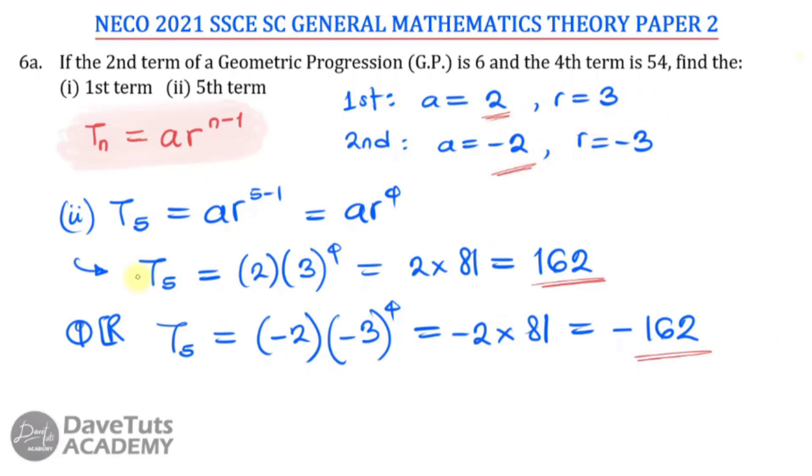So these are the possible solutions that we can have, that T5 can be 162 or minus 162, and the first term A can be 2 or it can be minus 2. Don't just take the square root of 9 as 3 and think you are getting your correct answer. You're only going to get half of the marks because square root of 9 is not 3, it is plus or minus 3. So just know that, and once you are able to pick that and solve your question, you are good to go and your full marks is assured.